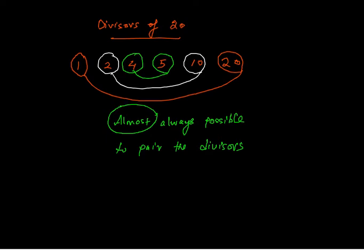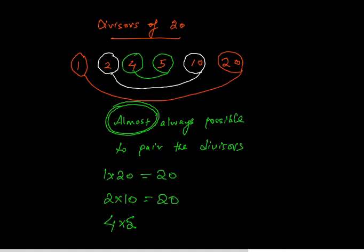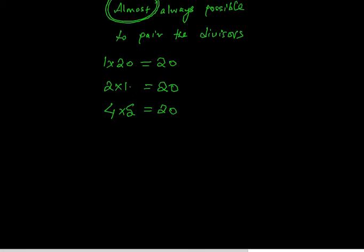And we are really interested in this 'almost' part. That is, we want to know when it is not possible to pair things up. First, let's see why it is almost always possible to pair the divisors. The reason is this: if you look at the pairing that I have done, the product of the numbers in each of these pairs—1 and 20, so 1 times 20, 2 times 10, 4 times 5—if you look at the product of each of the pairs, they end up in 20. So 1 times 20 is 20, 2 times 10 is 20, 4 times 5 is 20. In short, we will pair two divisors whose product is the number itself.